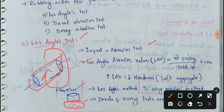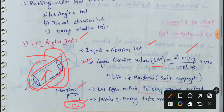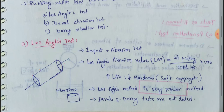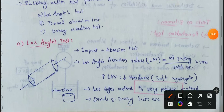The Los Angeles abrasion value is also abbreviated as LAV. The formula is: LAV equals the weight of material passing the 1.7 mm sieve divided by the total specimen weight (5–10 kg of aggregate), multiplied by 100.